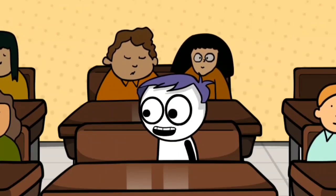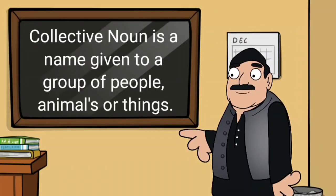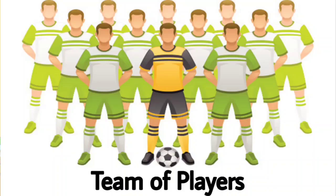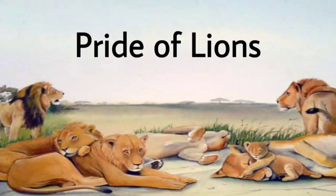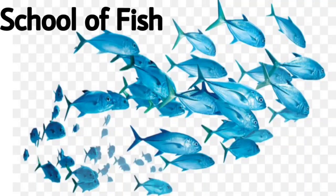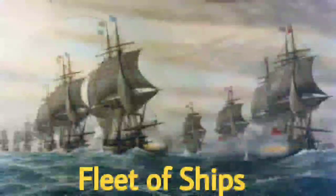Okay. Now what about collective nouns? A collective noun is a name given to a group of people, animals, or things. For example, a team of players, a flock of birds, a herd of elephants, a pride of lions, a school of fish, a fleet of ships.